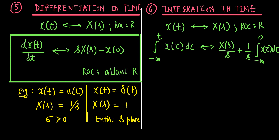The region of convergence for the integrated signal is going to be at least the intersection of R and {sigma > 0}. Let me emphasize: the ROC is at least R ∩ {sigma > 0}.